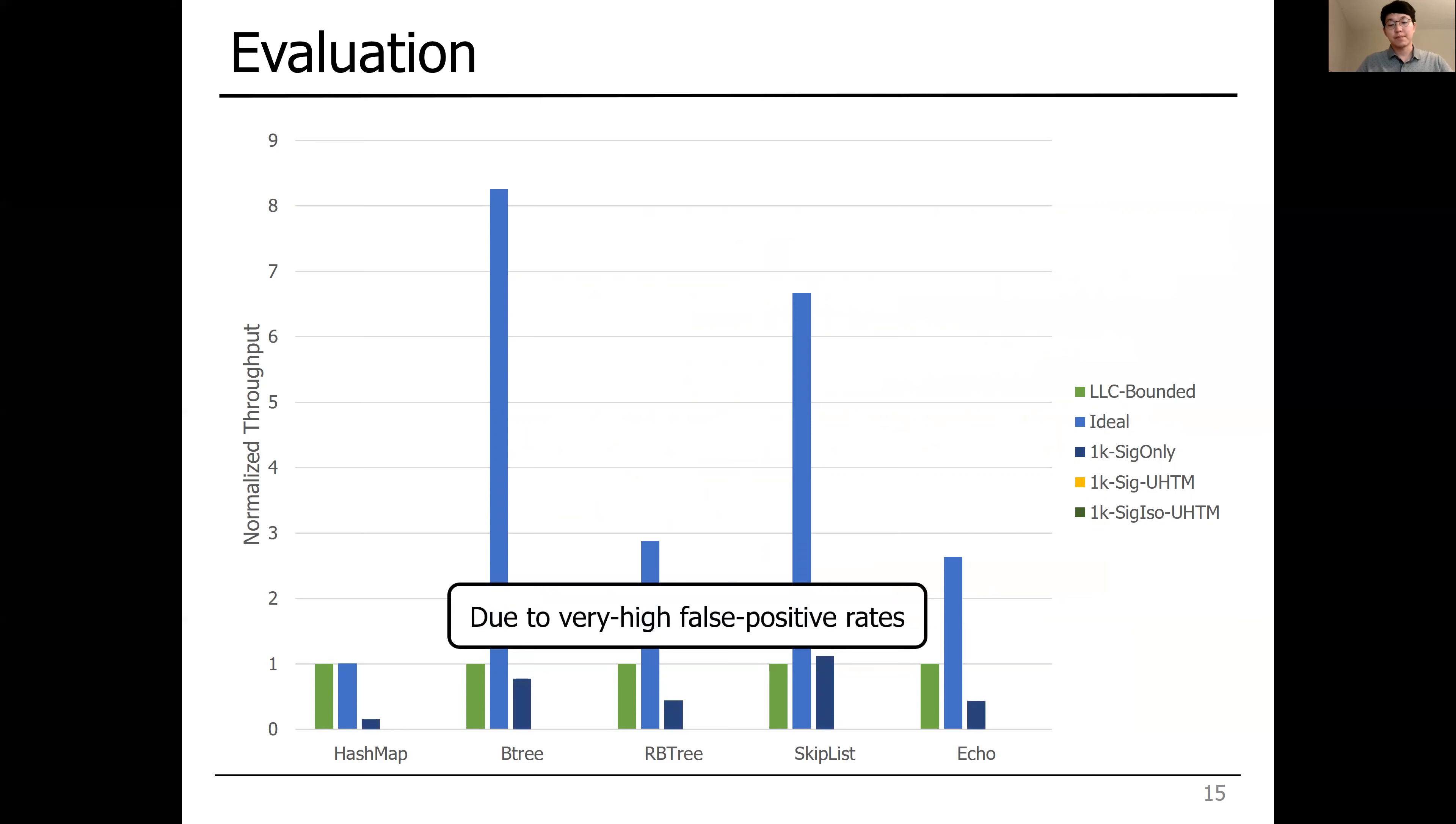On the other hand, the signature-only system even shows lower throughput than the baseline. This is because signature-only design generates too many false-positives, so that transactions were highly serialized.